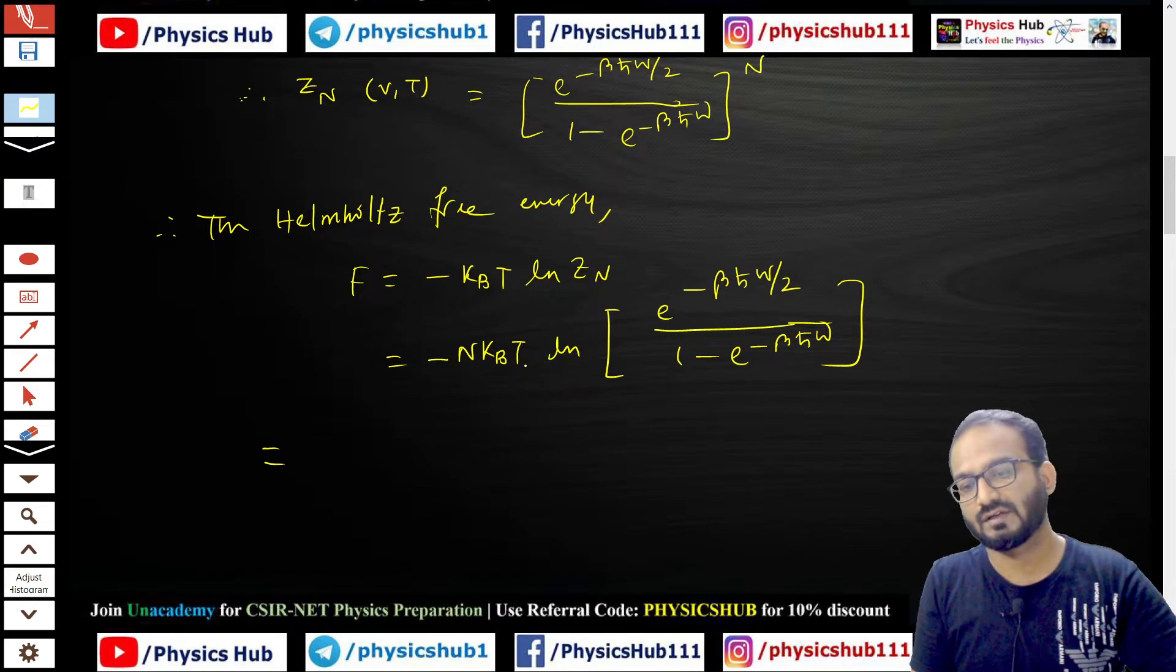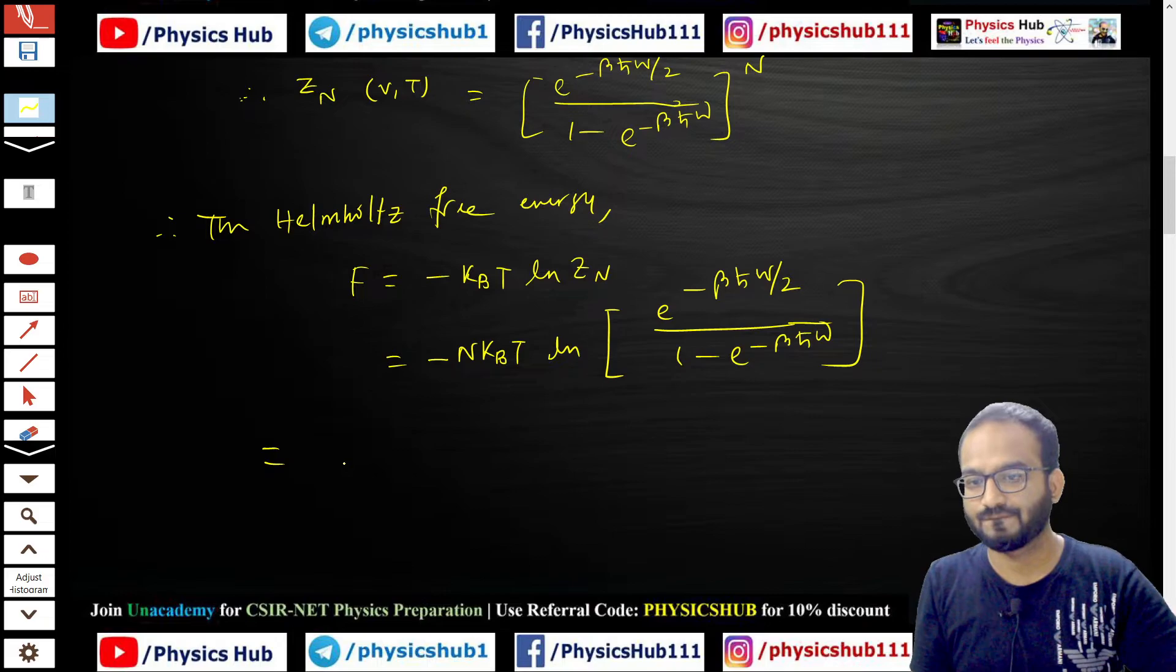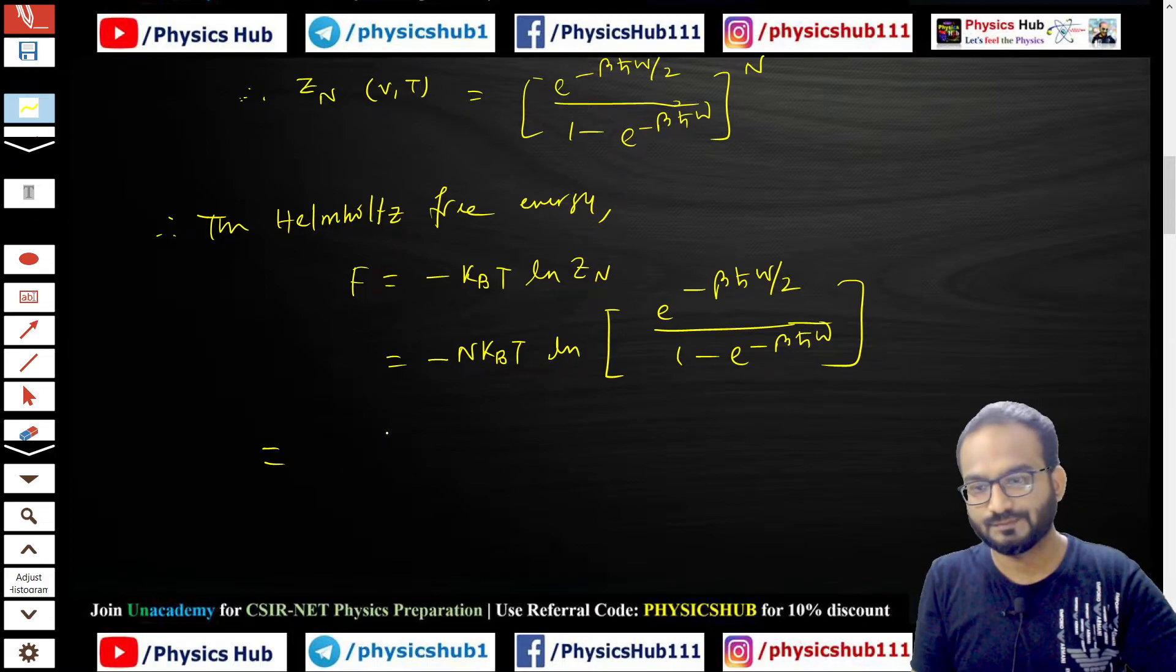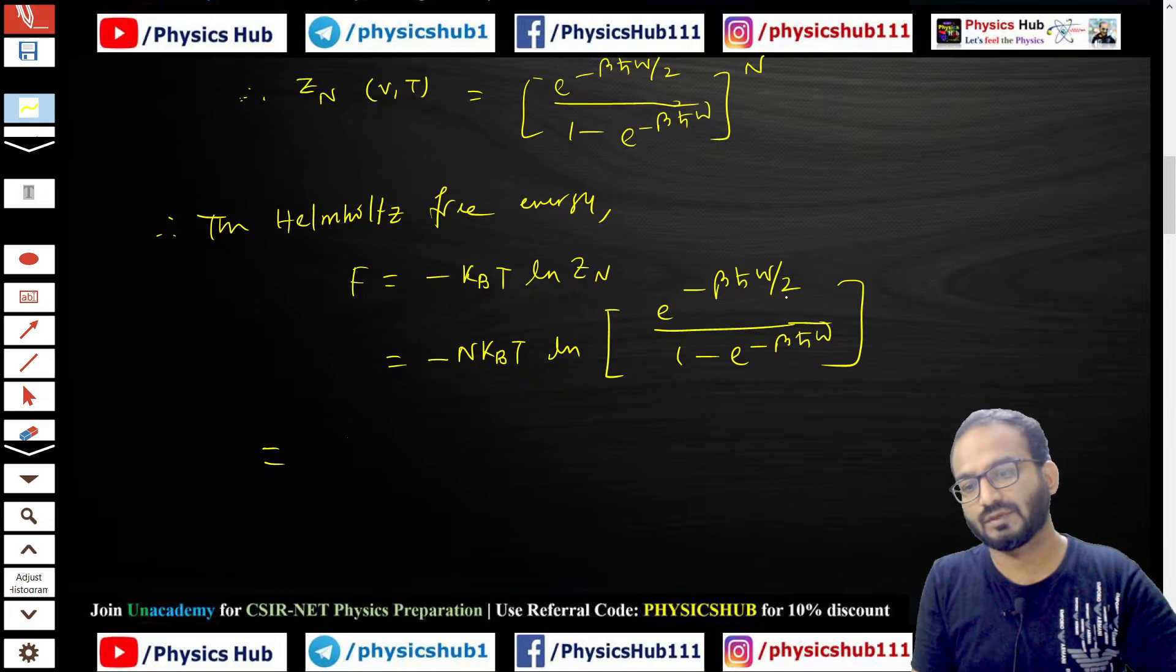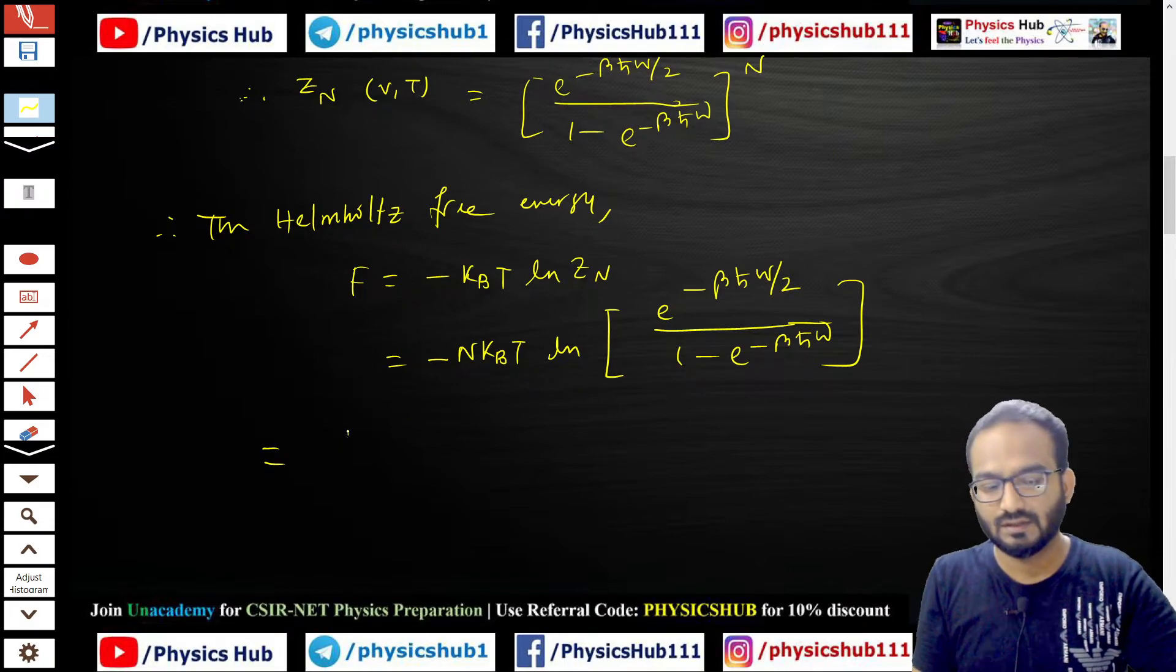So minus Nk_B T times ln of e to the power minus βℏω/2. Since β equals 1/(k_B T), the k_B T cancels, giving Nℏω/2.